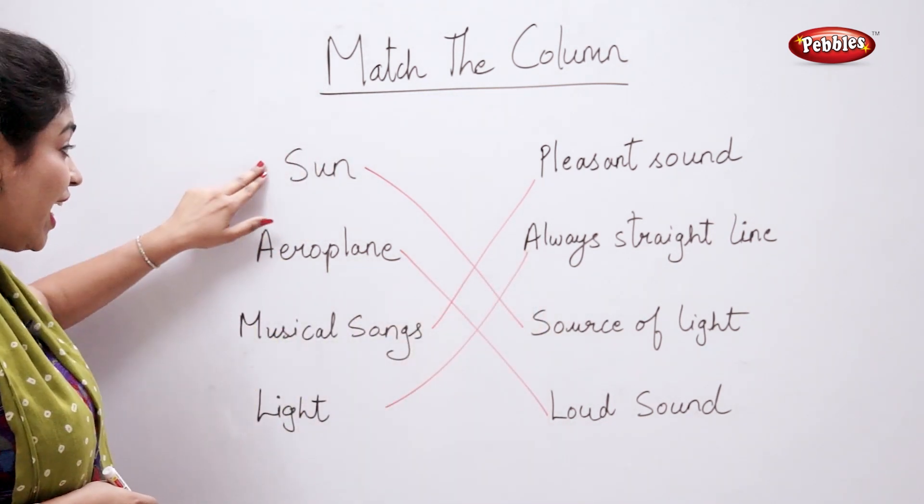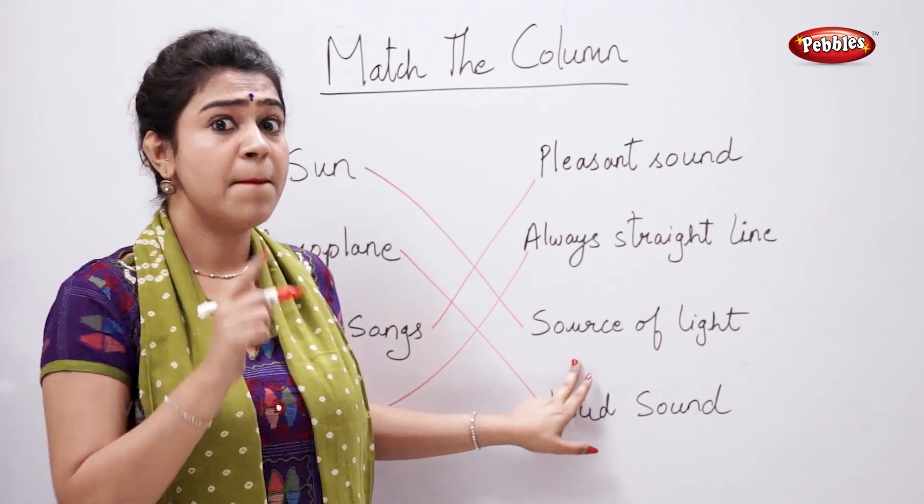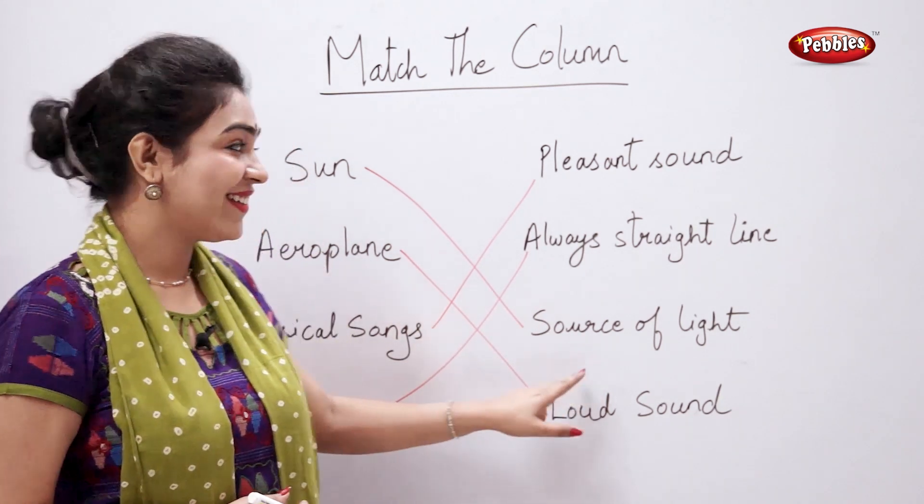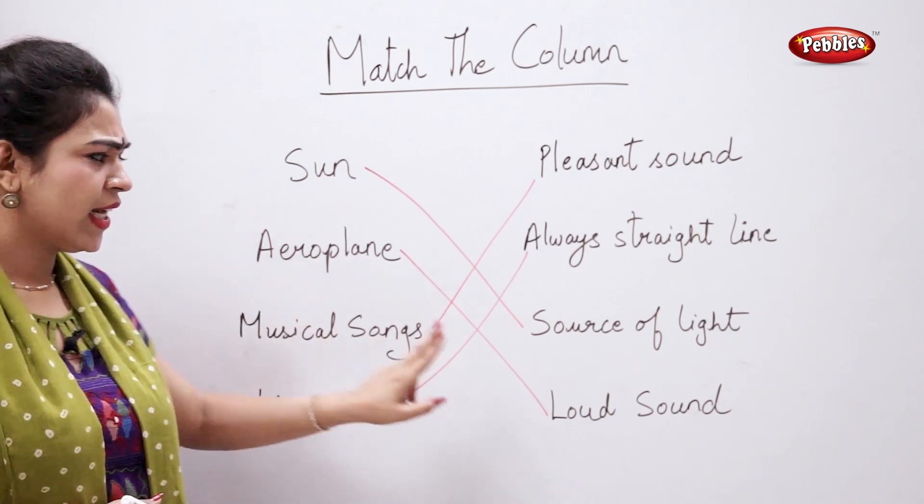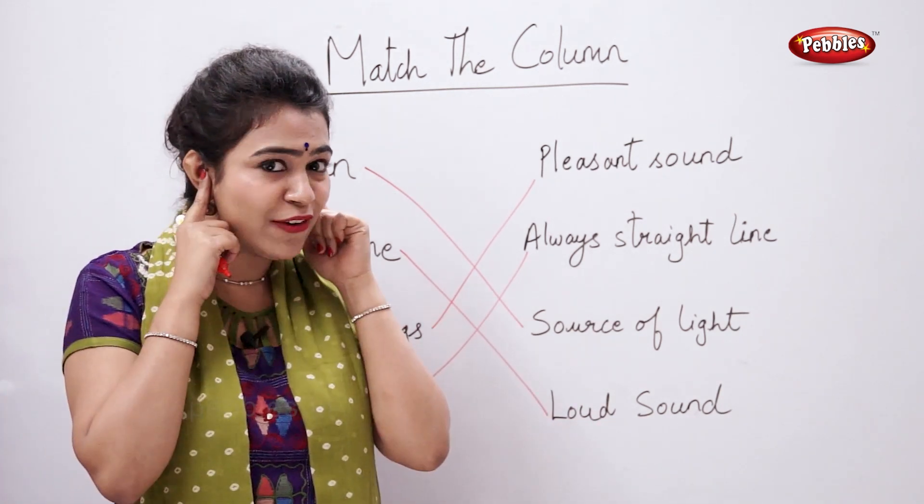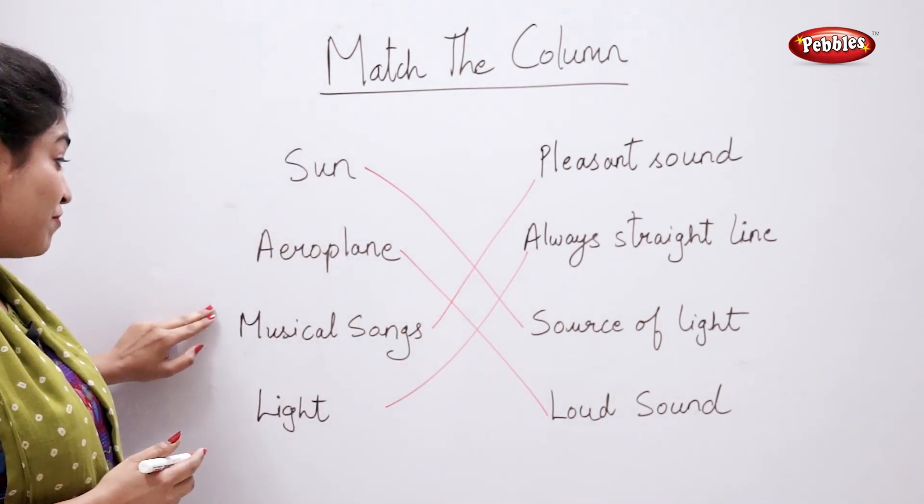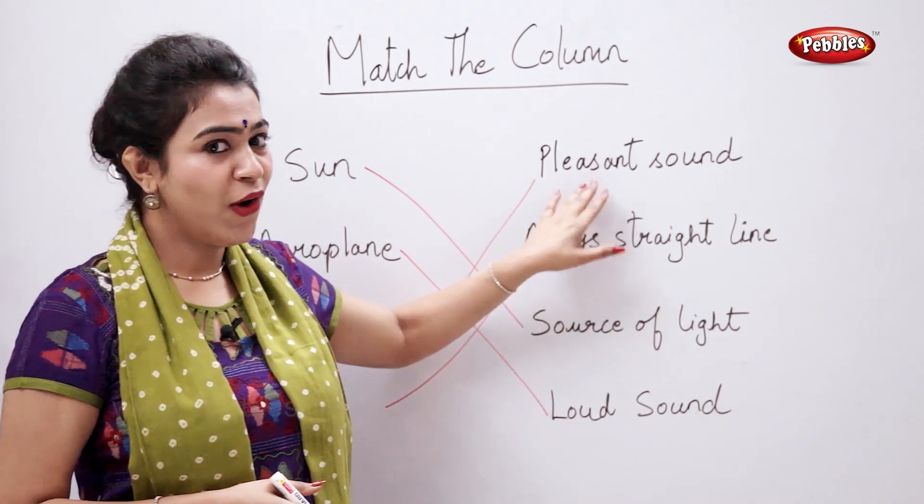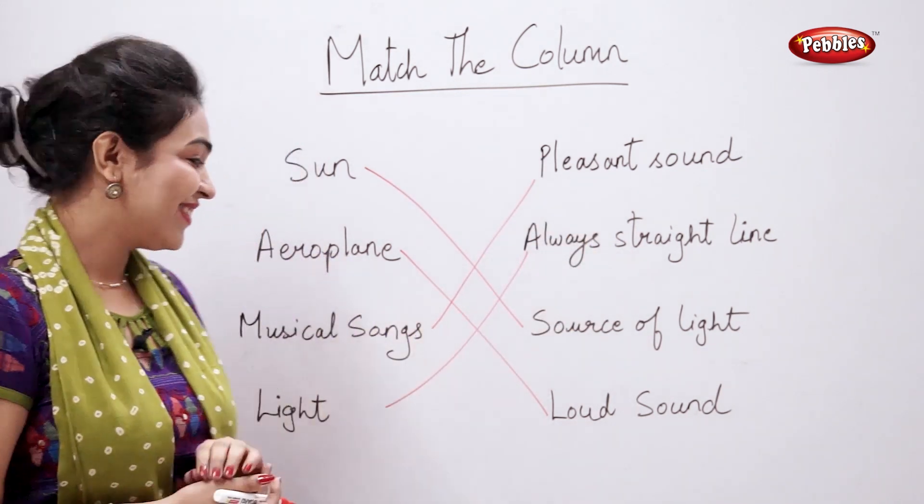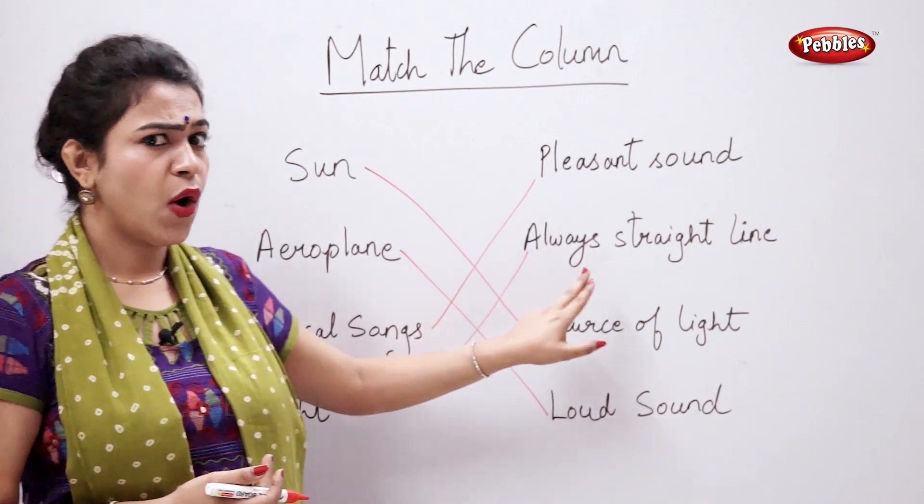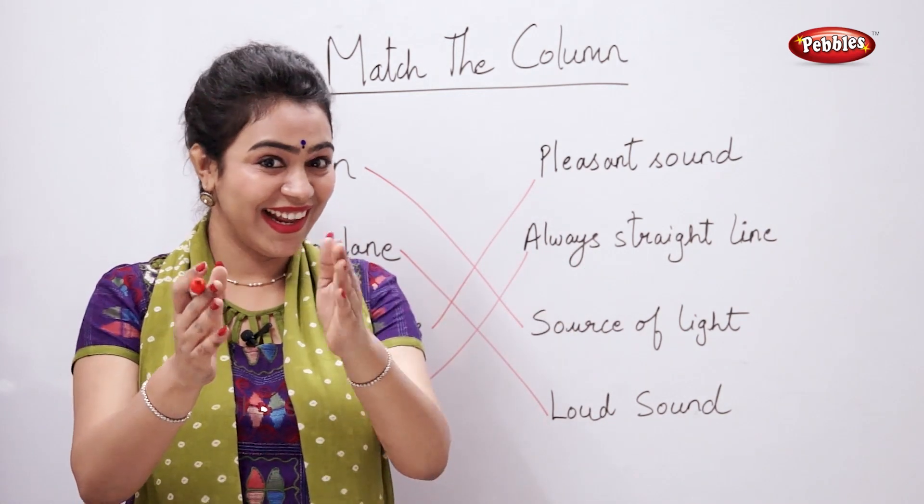So Sun is the main source of light. Aeroplane produces loud sound. Musical songs, always pleasant sound. Light always travels in straight line.